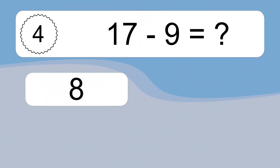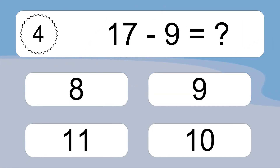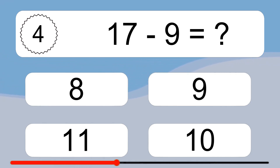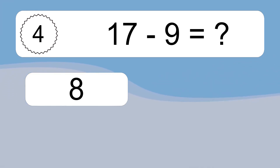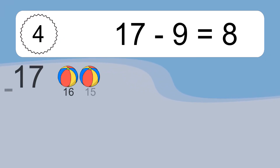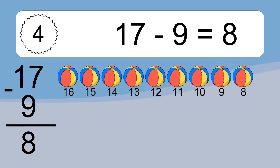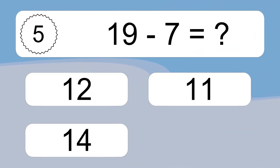17 minus 9 equals what? 17 minus 9 equals 8. Let's count it. 16, 15, 14, 13, 12, 11, 10, 9, 8.